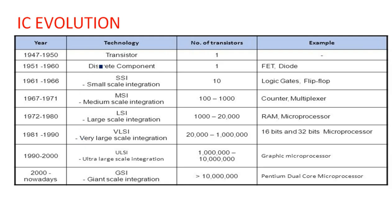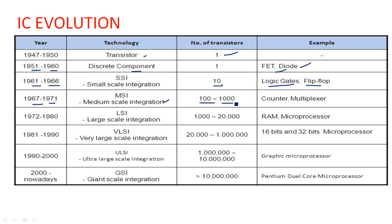In the 1940s to 1950s there was only a single transistor — no integrated circuit. From 1951 to 1960 there were discrete components: diodes, and a number of transistors. From 1961 to 1966 Small Scale Integration came into existence with around 10 transistors, using which we could build logic gates and flip-flops. From 1967 to 1971 Medium Scale Integration had 100 to 1000 transistors, enabling the design of counters and multiplexers.